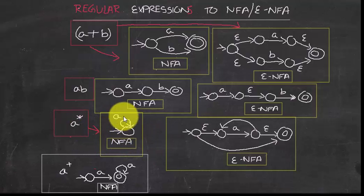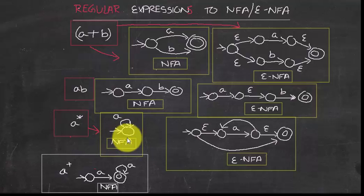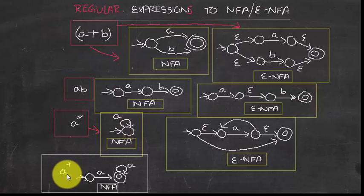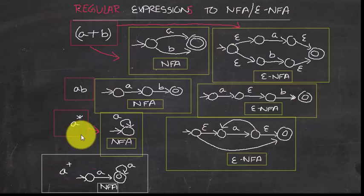For a*, the starting state is also the accepting state, since it can accept zero or more occurrences of A. There is also A+ for NFA: this superscript plus denotes one or more occurrences of A — the minimum is one and the maximum is infinity.